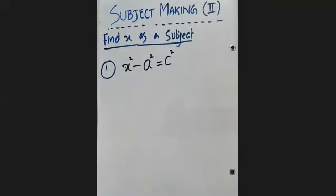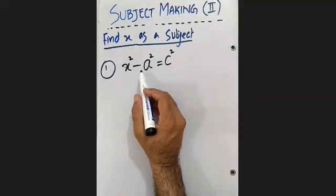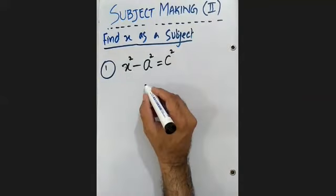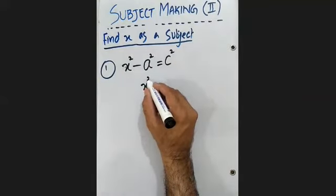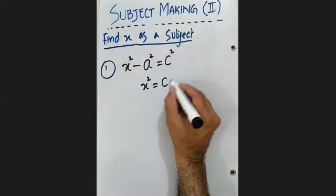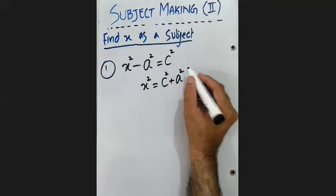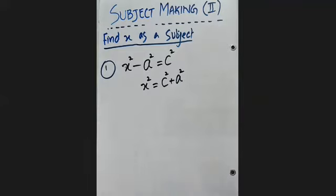x squared minus a squared equals c squared. We will create a subject. First of all, we will create a squared. We will remove a squared. A squared is here subtracted. We will do the opposite. We will add a squared. Equal to c squared plus a squared.